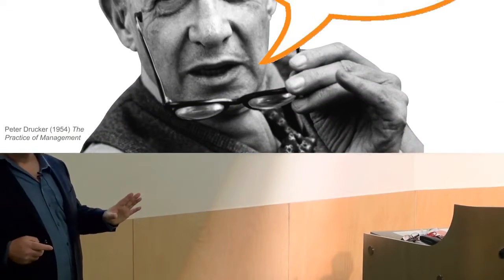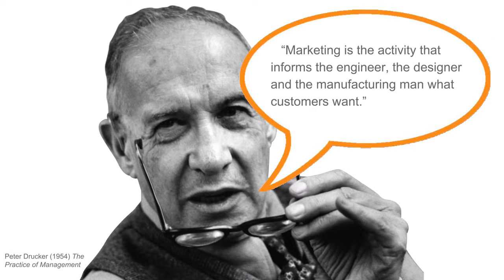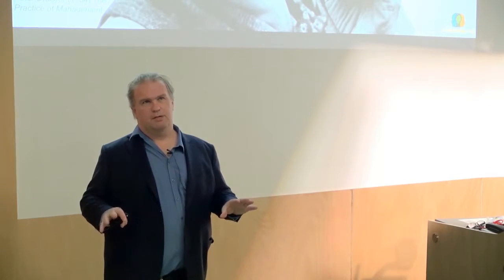The original management guru Peter Drucker, in the 1950s, he wrote a fascinating book, The Practice of Management. And it's still valid. It's an amazing piece of work. There's a few lines in there that I find very interesting. Early on in the book, he talks about marketing is the activity that informs the engineer, the designer, and the manufacturing man. Back in those days, it was all about man. What customers want. So he started to recognize that engineers and marketers need to work together. And that's still a bit of a hot issue. There's still tension between engineers and marketers because they have a very different education.